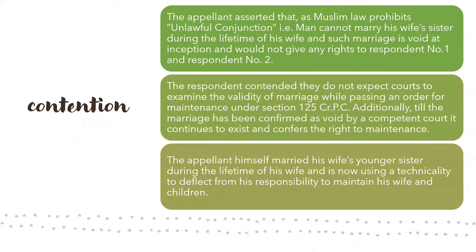The appellant's contentions were that Muslim law prohibits unlawful conjunction — that is, a man cannot marry his wife's sister during the lifetime of his wife, and such marriage is void at the inception and would not give any rights to respondent number one and respondent number two. The respondent contended that courts need not examine the validity of marriage while passing an order for maintenance under Section 125 CrPC. Additionally, till the marriage has been confirmed as void by a competent court, it continues to exist and confers the right to maintenance. The appellant himself married his wife's younger sister during the lifetime of his wife and is now using a technicality to avoid his responsibility to maintain his wife and children.